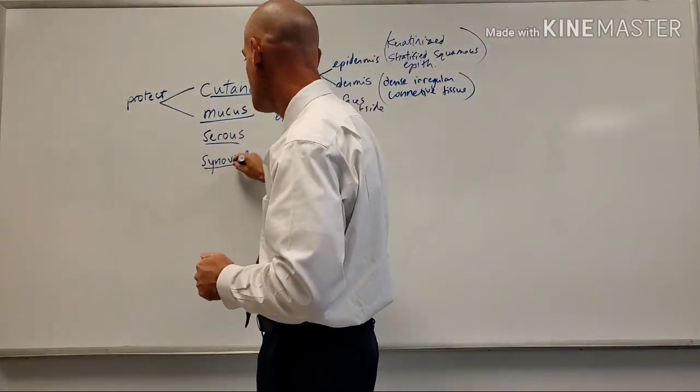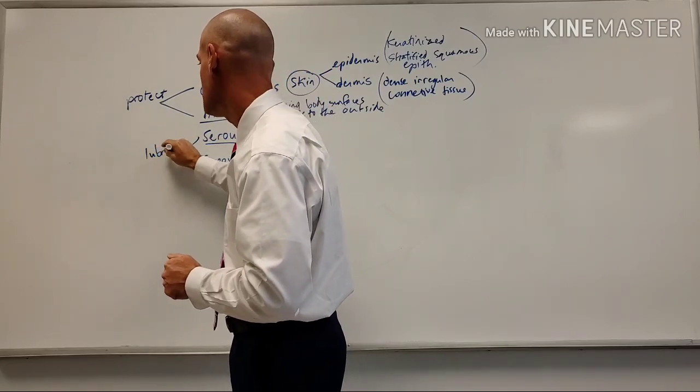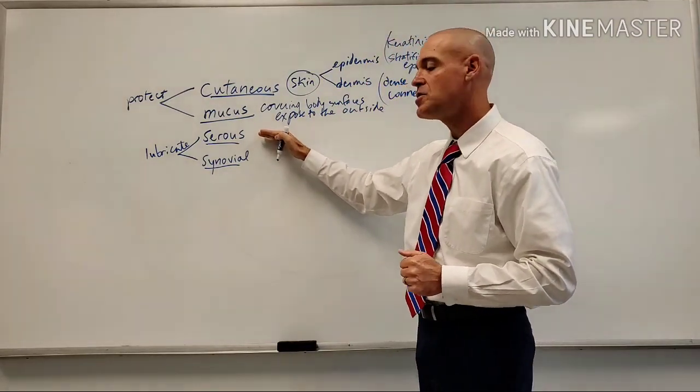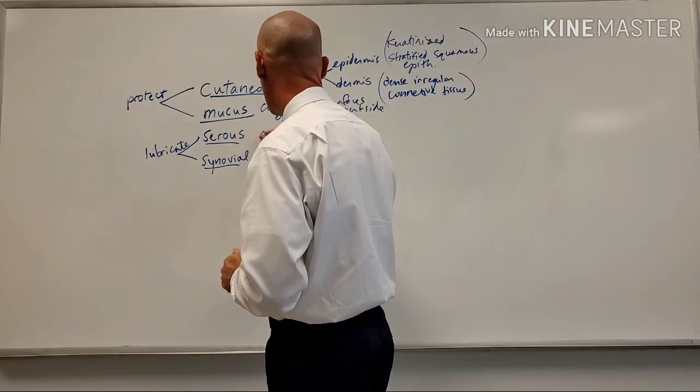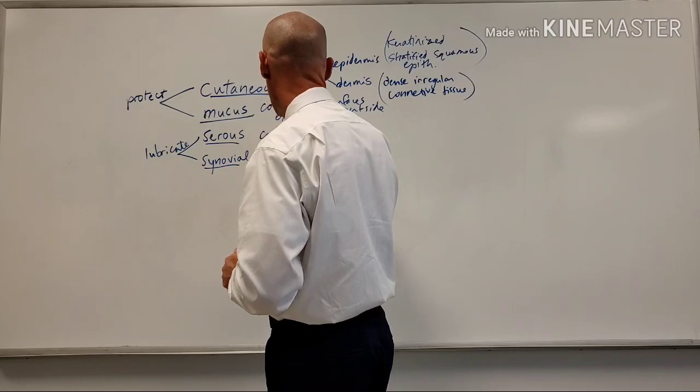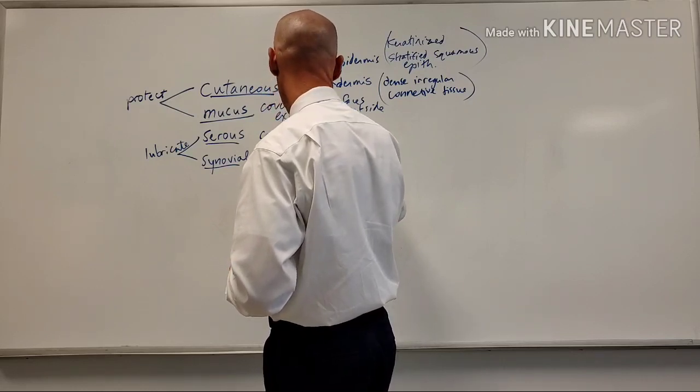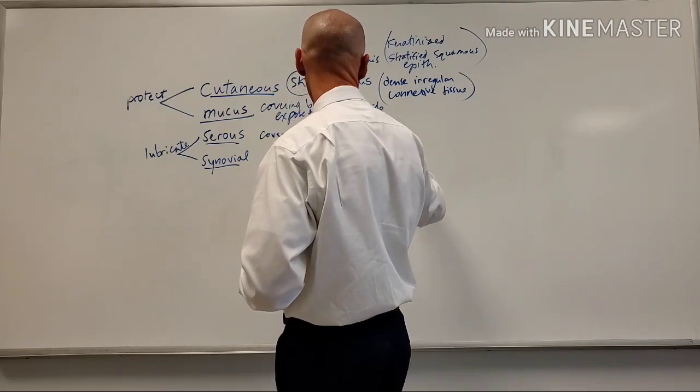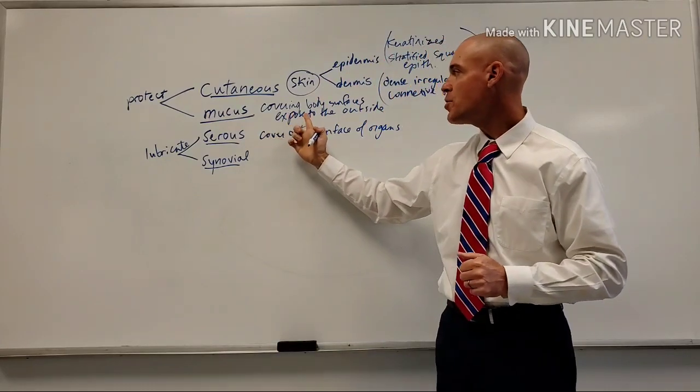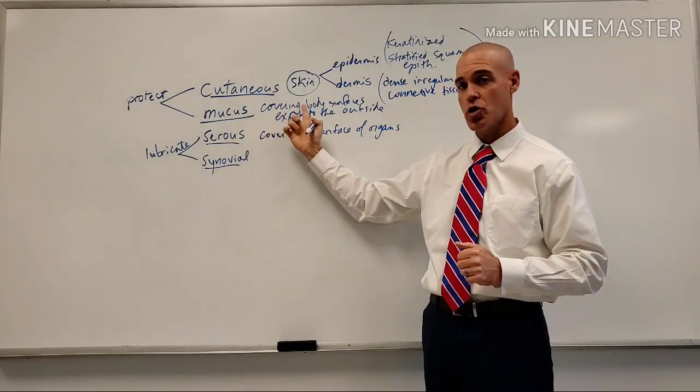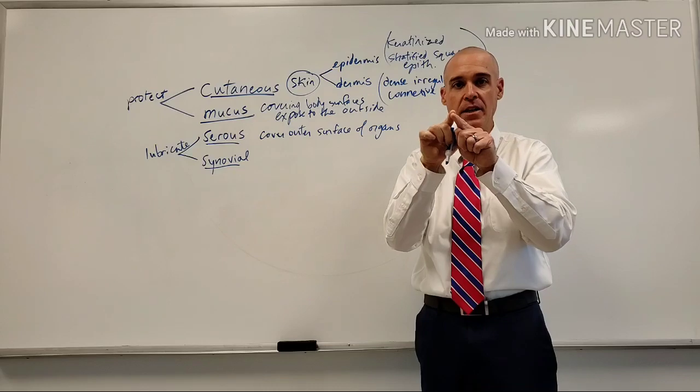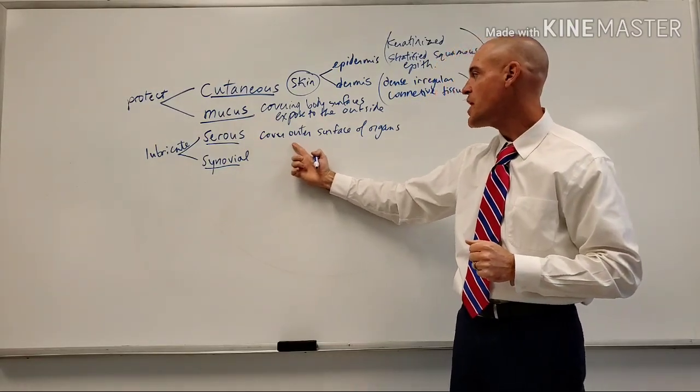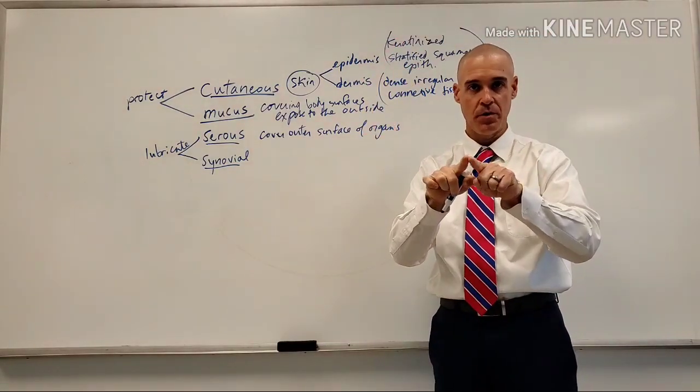Now, the next two are going to be lubricating membranes. That is their function. The serous membrane is going to be very similar. It is going to cover the outer surface of organs. And this is the key thing: if the mucous membrane is covering the inner surfaces, the internal linings, and they're exposed to the outside, the serous membrane is going to cover the outer linings of the organ.